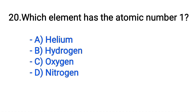Question number 20. Which element has the atomic number 1? Option A: Helium. B: Hydrogen. C: Oxygen. D: Nitrogen. The correct answer is option B, Hydrogen.